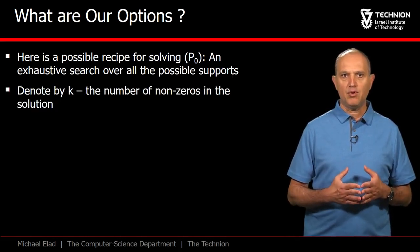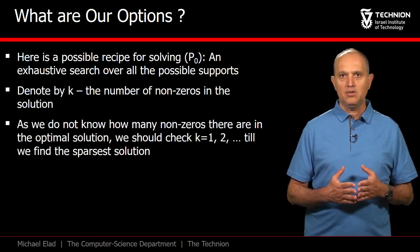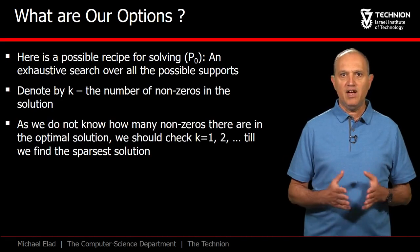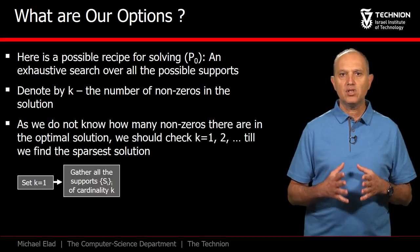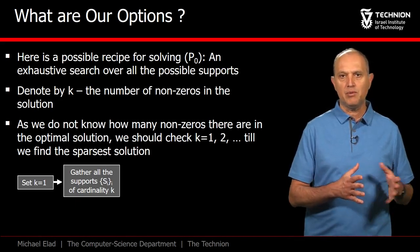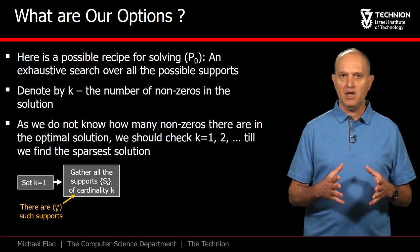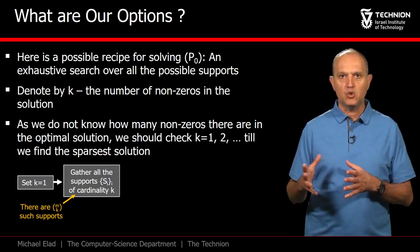We denote by k the number of non-zeros in the solution. Clearly, we do not know k, so we will sweep through its possible values. Starting with k equals 1, we should check all the possible options of supports of cardinality k, and per each, test whether a solution can be created. For a general value k, there are m choose k such tests to perform.